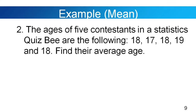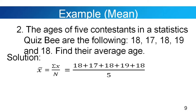Let's go to example number 2. The ages of 5 contestants in a statistics quiz bee are: 18, 17, 18, 19, and 18. Find their average age. Using the same formula, x̄ = (18 + 17 + 18 + 19 + 18) / 5 = 90 / 5 = 18. So the average age of the contestants is 18 years old.